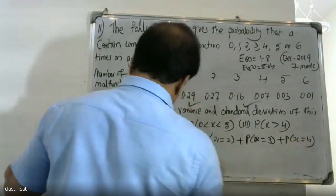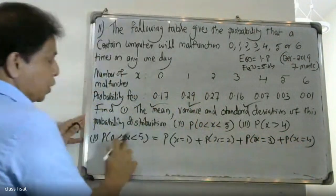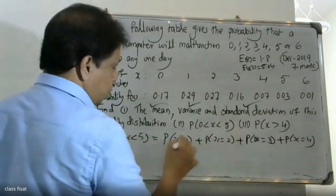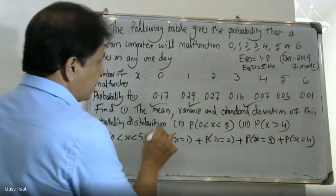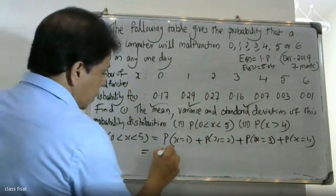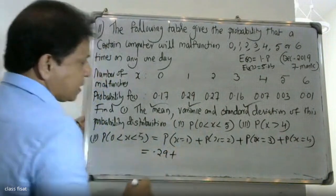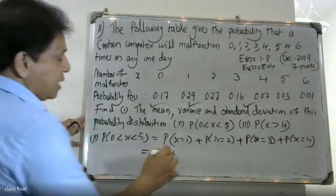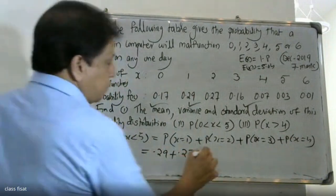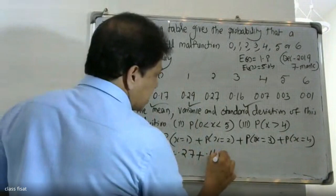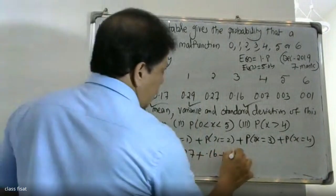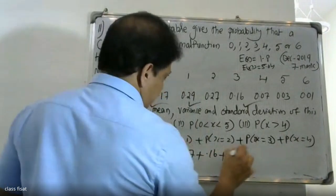Now for P(X > 4). The values of x greater than 4 are 5 and 6. The corresponding probabilities: P(X = 5) = 0.03 and P(X = 6) = 0.01. Also noting: P(X=1) = 0.29, P(X=2) = 0.27, P(X=3) = 0.16, P(X=4) = 0.07.